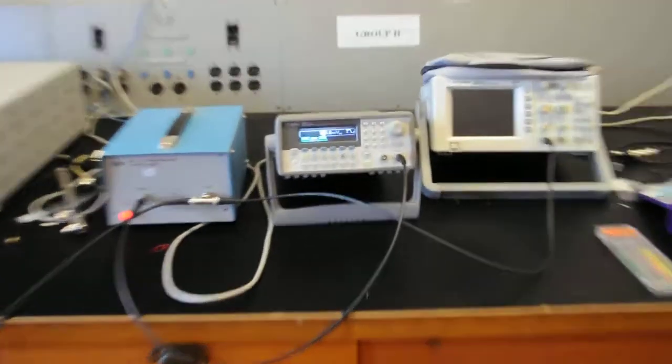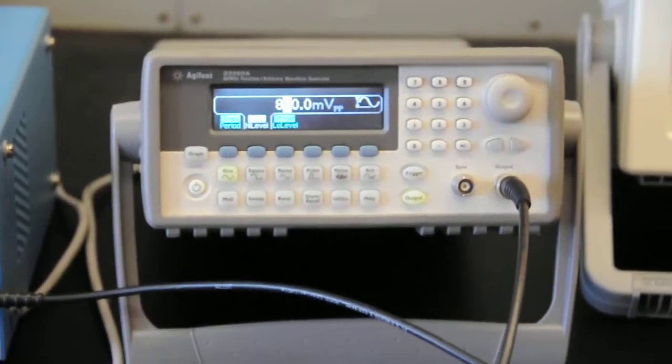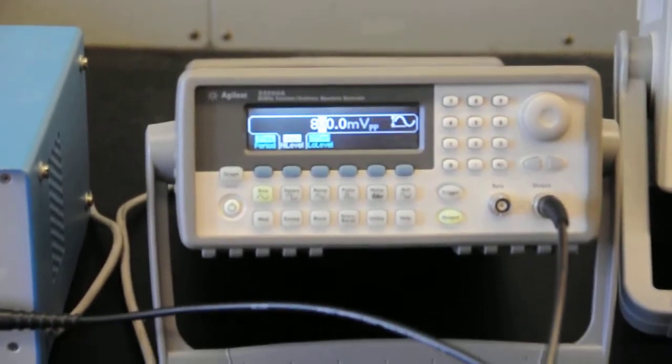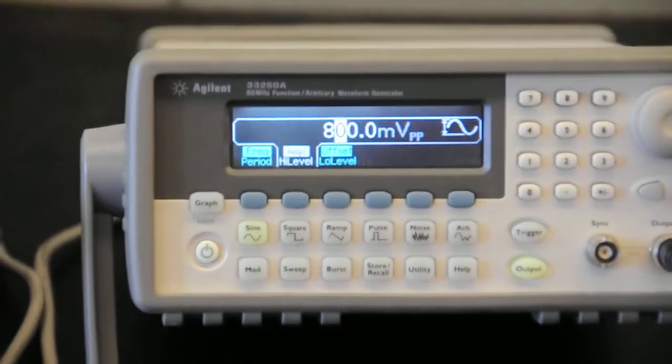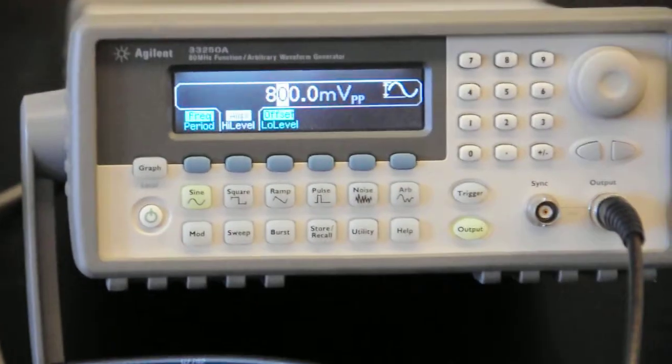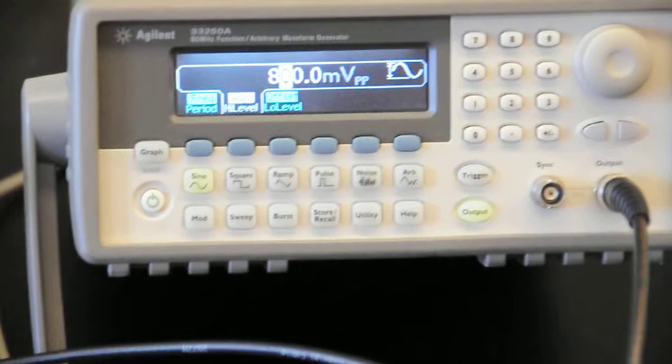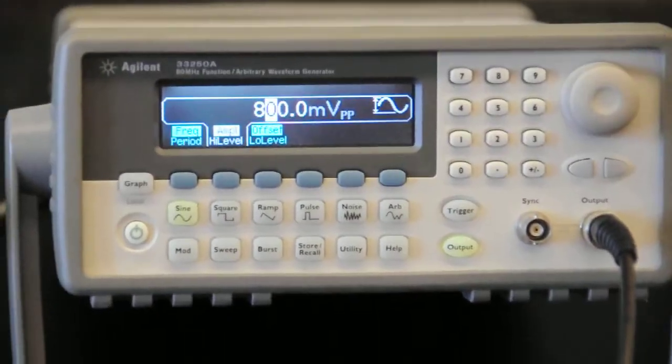Right here you see we are using an Agilent 33250A function generator. It's giving out about 800 mV peak-peak. Right now it's also in a sine wave at about 6.64 MHz.